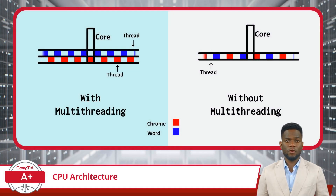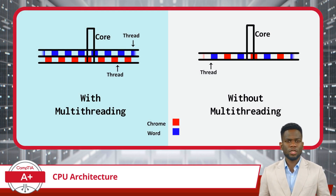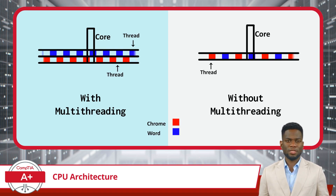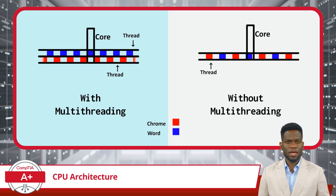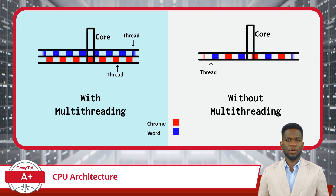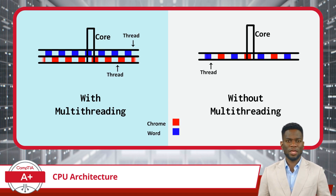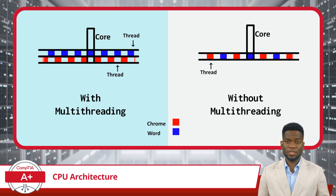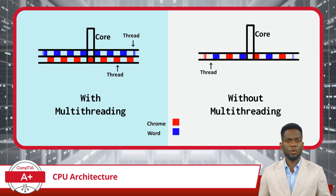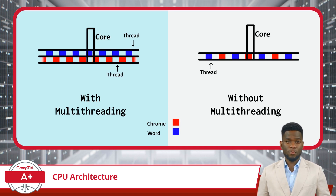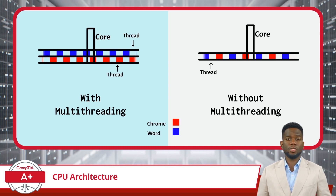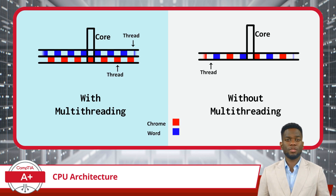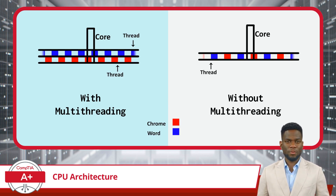Multi-threading stands as another integral feature of CPU architecture, revolutionizing how processors handle tasks. Fundamentally, multi-threading empowers a processor core to simultaneously execute multiple threads or sequences of instructions, thereby maximizing CPU resource utilization and bolstering responsiveness in multitasking environments. In a conventional setup, imagine a processor core handling two threads simultaneously — editing a document in Microsoft Word and loading web pages in Google Chrome. In this traditional configuration, the processor may experience idle periods while waiting for data retrieval or completing certain operations. However, with multi-threading, the processor can seamlessly switch between executing different threads, effectively filling these idle gaps with productive work.